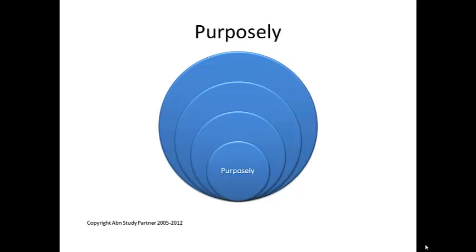When you do something purposely, you have a conscious desire to do it. For example, I'm going to go kill my next-door neighbor, or the guy who's sleeping with my estranged wife. I want to kill him, I'm going to grab a gun. I want to premeditate and deliberate, I want to lie in wait, I want to shoot that person with my gun. So purposely, you have a desire to do something.